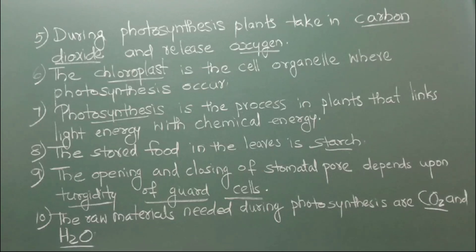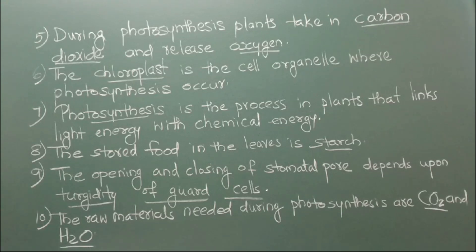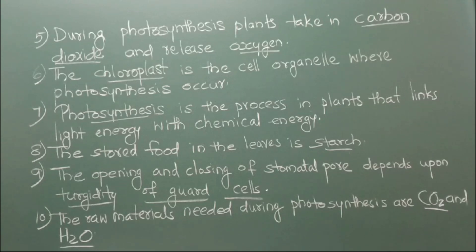Number 7: Blank is the process in plants that links light energy with chemical energy. The answer is photosynthesis. Number 8: The stored food in the leaves is blank. The answer is starch.